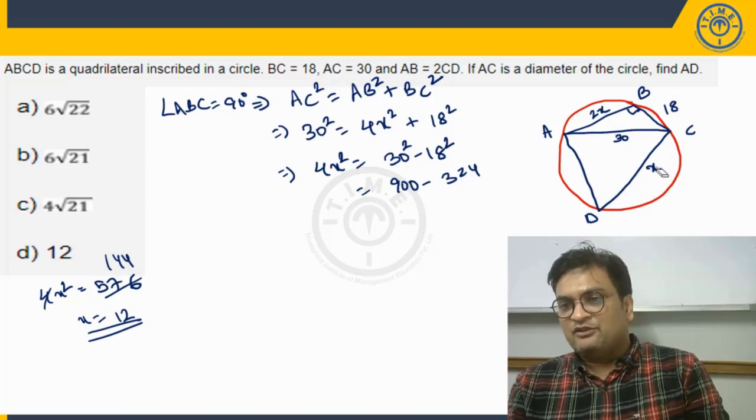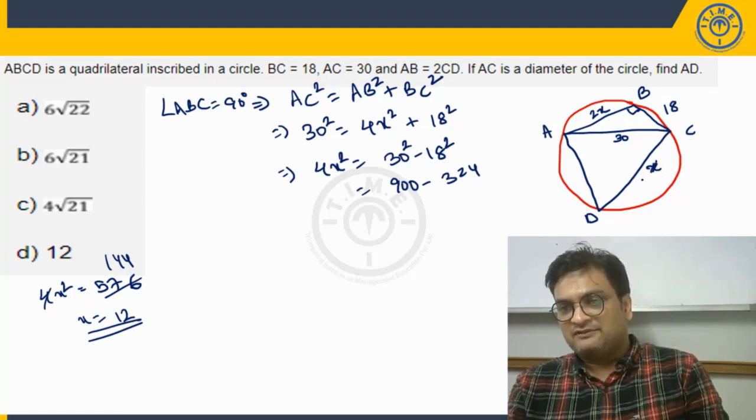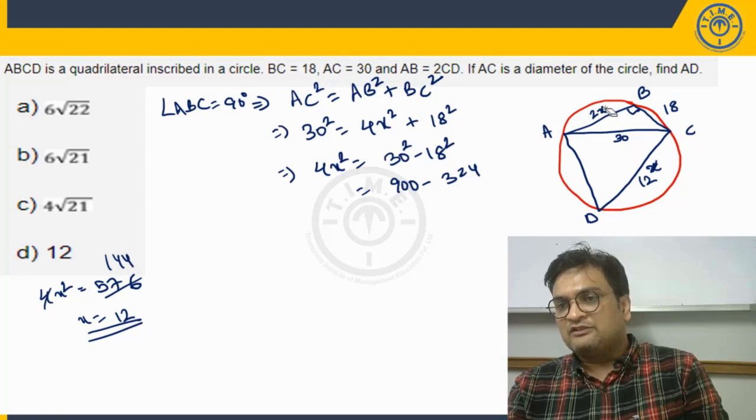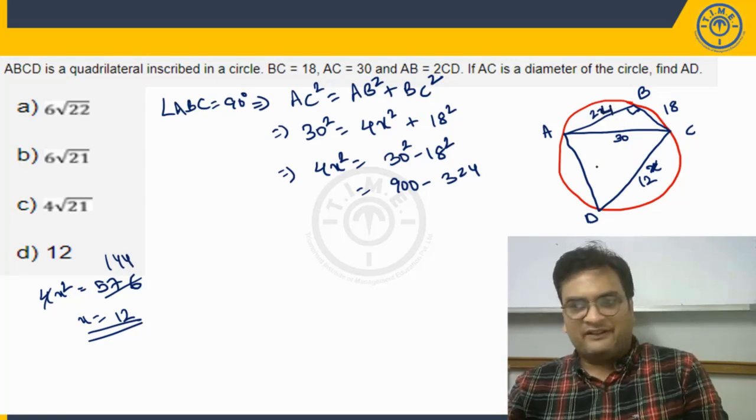So this length here is going to be 12 units. So this is 12. So this is going to be 24 then, okay, twice of x, 24.